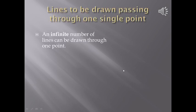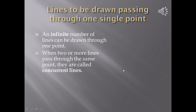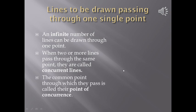An infinite number of lines can be drawn through one point. When two or more lines pass through the same point they are called concurrent lines. The common point through which they pass is called their point of concurrence.